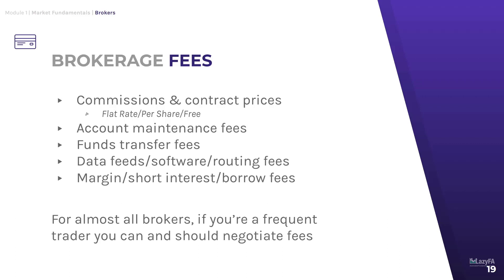Brokers that cater to more advanced traders will usually offer you a choice in terms of commission — whether you want to pay a flat rate per trade, or if you're trading smaller positions or very expensive stocks, it might be more cost-effective to pay per share rather than a flat rate. You also want to keep an eye on account maintenance fees, as well as data fees, software fees, and routing fees, which can rack up significantly on more advanced brokers. The key thing though is that for almost all brokers, if you're a frequent trader, you can and should negotiate fees. If you're making a thousand trades per year, you should not be paying $7.95 per trade — you should negotiate that fee down to a couple bucks per trade, and if they're not willing to do that, you should be using a different broker.